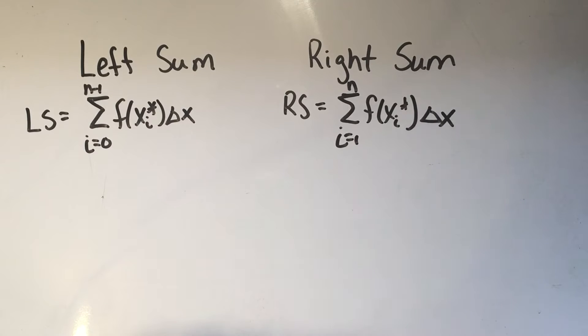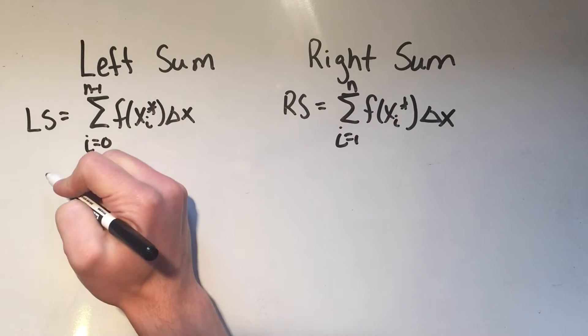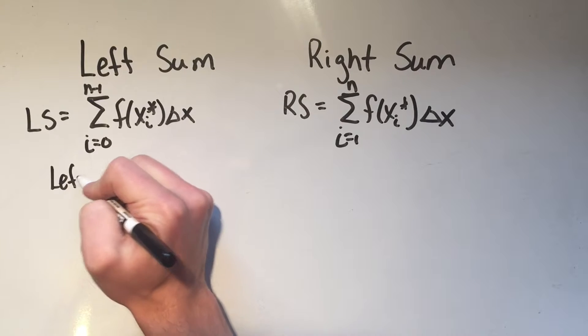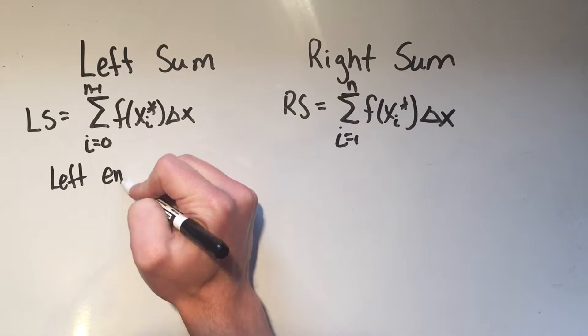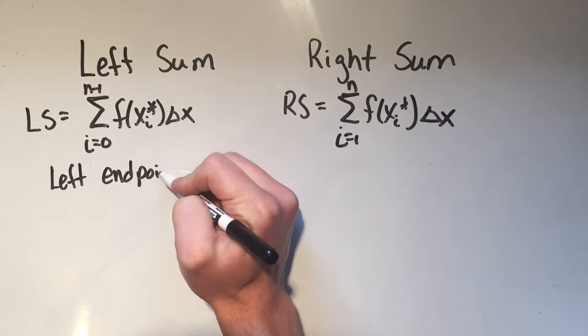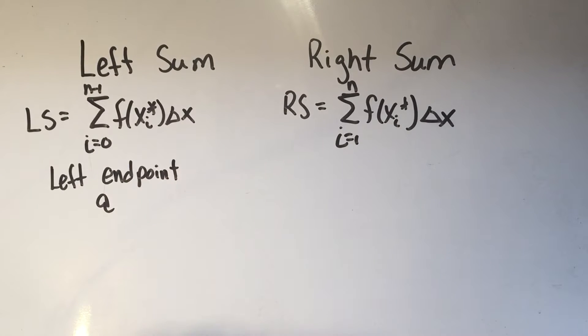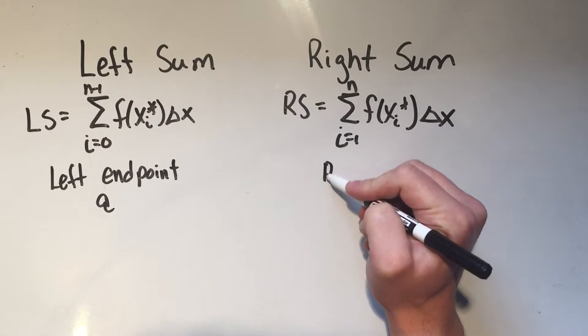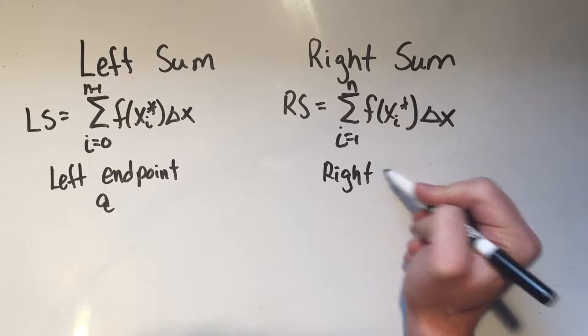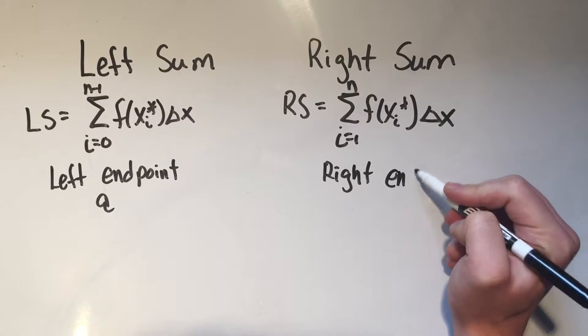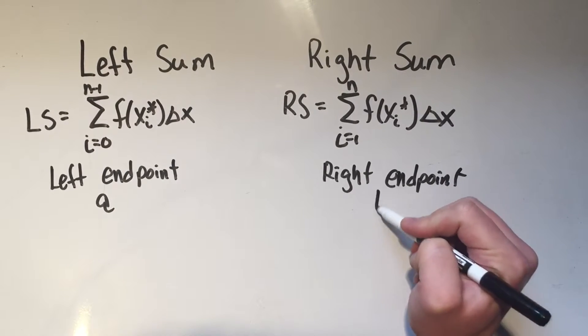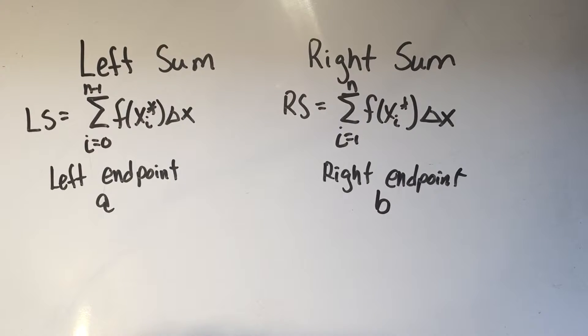What that means for your calculation is that in the left sum, the left endpoint, which is a, is included. And for the right sum, as you might have guessed, the right endpoint is included, and that's usually called b.